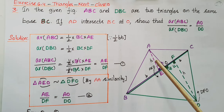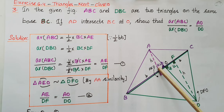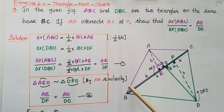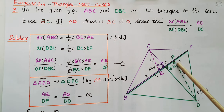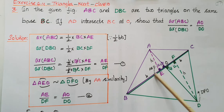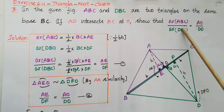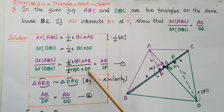We know that area of a triangle is one-half times base times height. For triangle ABC, the base is BC and we draw a perpendicular altitude AE, so AE is the height of triangle ABC. Similarly, we draw altitude DF, so DF is the height of triangle DBC. Area of ABC equals one-half times BC times AE, and area of DBC equals one-half times BC times DF. Therefore, area of ABC by area of DBC equals AE by DF, after cancelling the one-half and BC. This is our first equation.